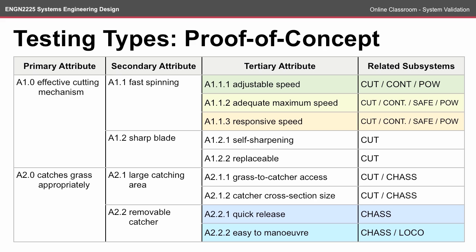At the proof of concept stage, the tests start to become a little bit more difficult. The adjustable speed attribute, for example, isn't something that we can just test through a simulation or model. We need to start looking at how that is going to happen within our system. Likewise, each of the attributes listed here would need a different proof of concept test to ensure that the design meets that requirement.